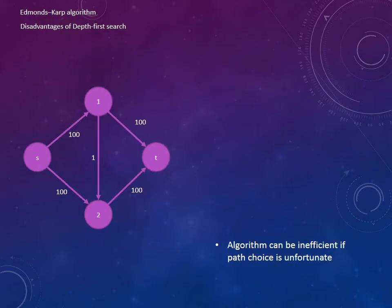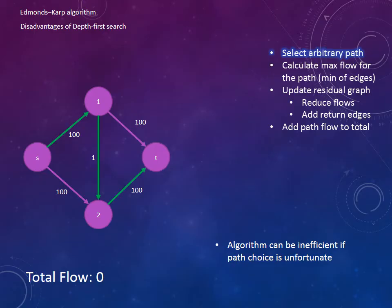Now we are going to solve our max flow problem on this example simplistic network using depth-first search. And we are going to highlight why the Edmonds-Karp algorithm is truly the superior method.